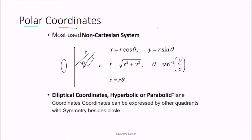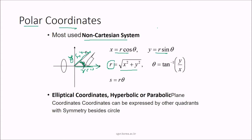Polar coordinates are the most used non-Cartesian system. If we consider a point at distance r and angle theta with the coordinate axis, the projection is r·cos(theta) for x and r·sin(theta) for y. Squaring and adding gives r² = x² + y², so r = √(x² + y²). The angle theta = tan⁻¹(y/x), and arc length s = r·theta. This non-Cartesian system is used for elliptical, hyperbolic, and parabolic coordinates.